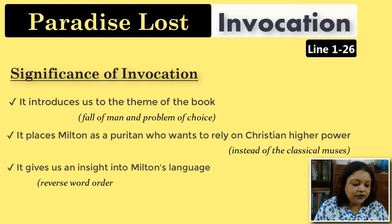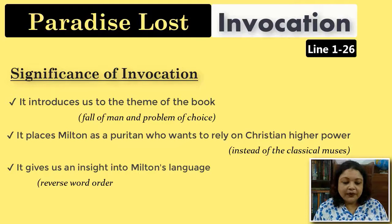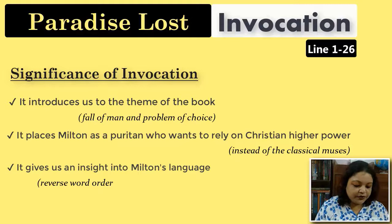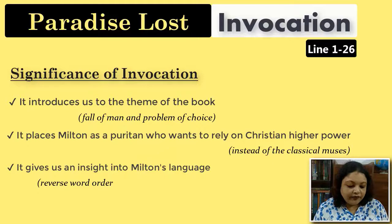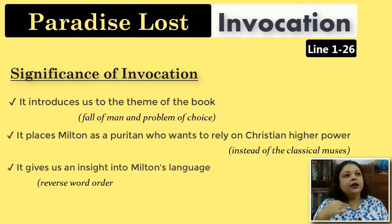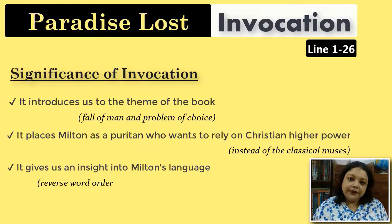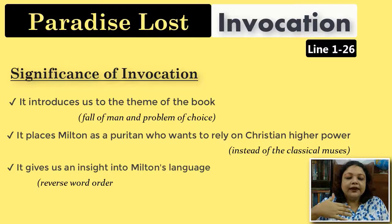Milton begins the invocation with a series of phrases and clauses — 'of man's first disobedience and the fruit of that forbidden tree, whose mortal taste brought death into the world and all our woe' — these are all objects of the sentence. The verb 'sing heavenly muse' comes only at the end. In normal English word order, subject comes before verb before object, but Milton inverts this pattern, placing the object first so that the climactic words 'sing heavenly muse' ring out with resonance.